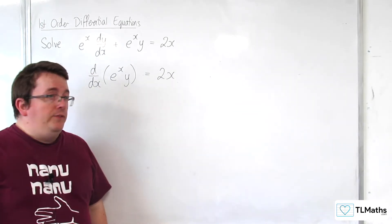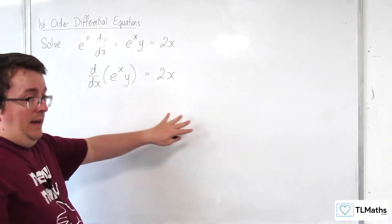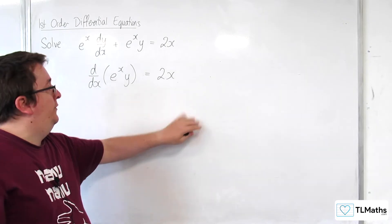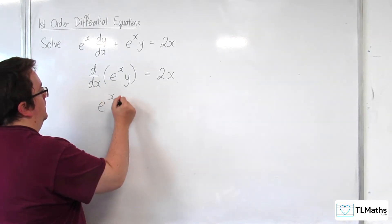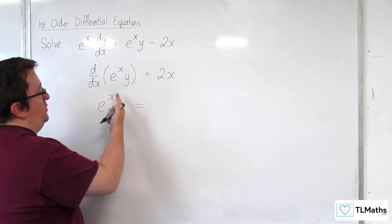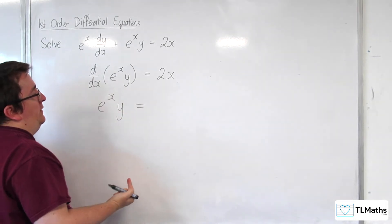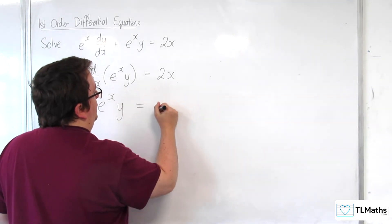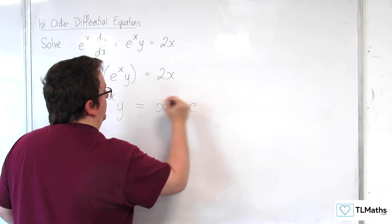Which means that I can now integrate both sides with respect to x. So, I just get e to the x times y on the left-hand side. And 2x integrates to x squared plus some constant.